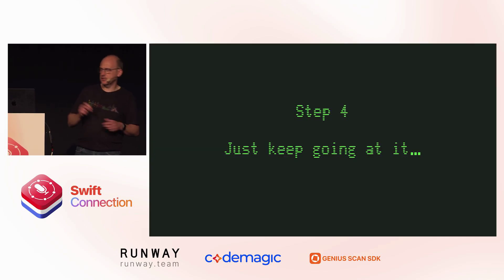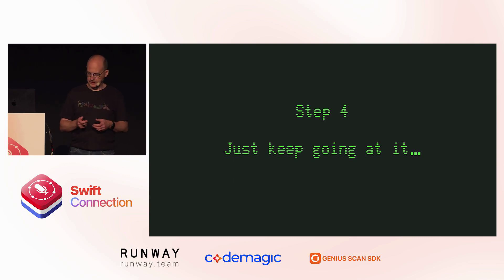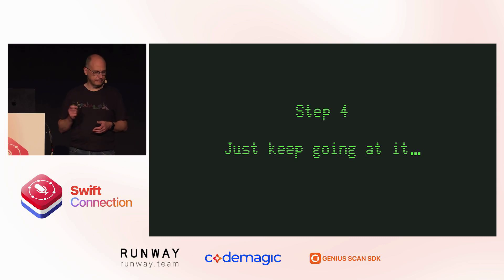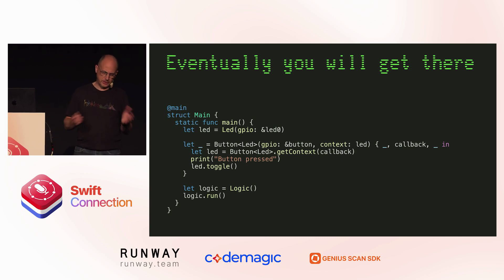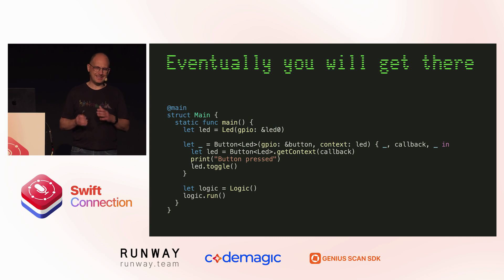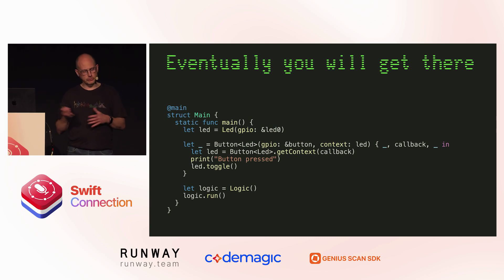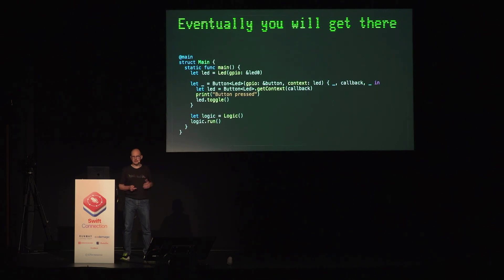That's just an LED, so I wanted a button and all kinds of other stuff. You just keep going at it, hit some issues, try to work around them. Eventually you get code that looks like Swift — you can instantiate a class, you can have a Button that's generic (because generic specialization at compile time works fine), and you have a trailing closure for the handler when you push the button. To me, that's the kind of level I would like to program at with embedded Swift.